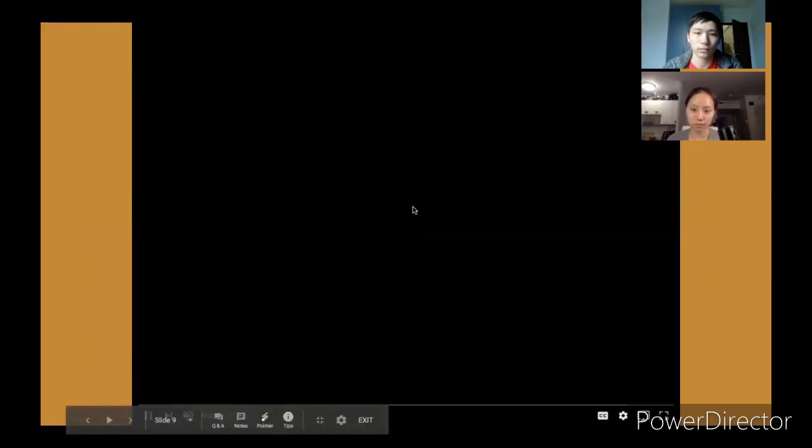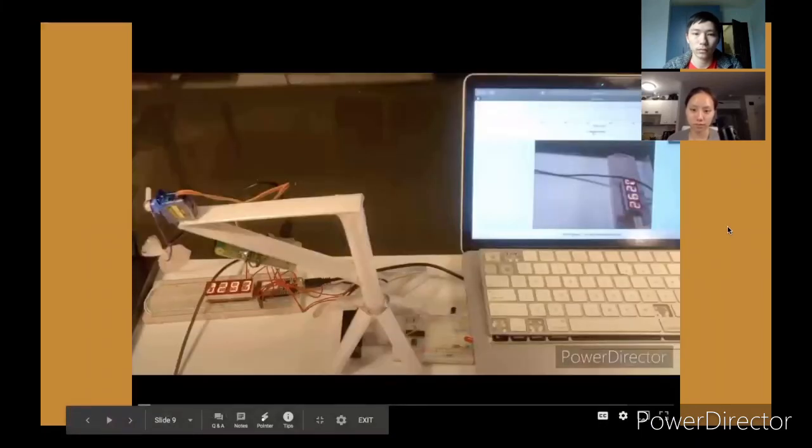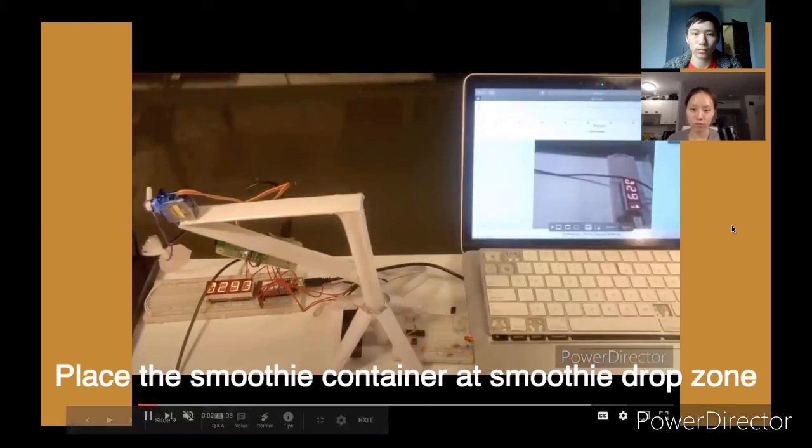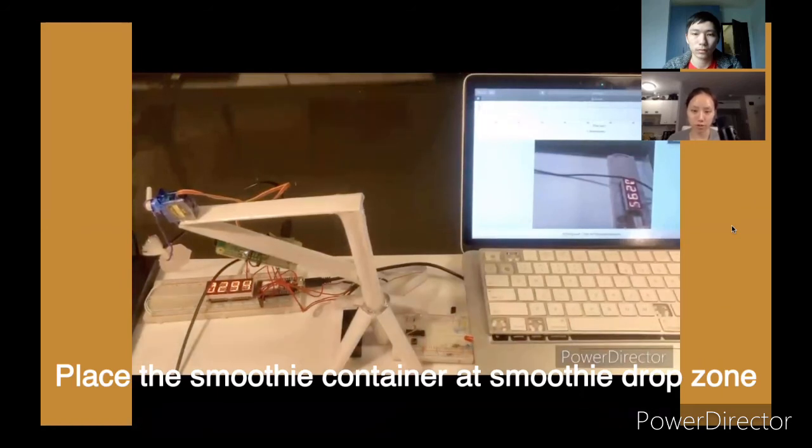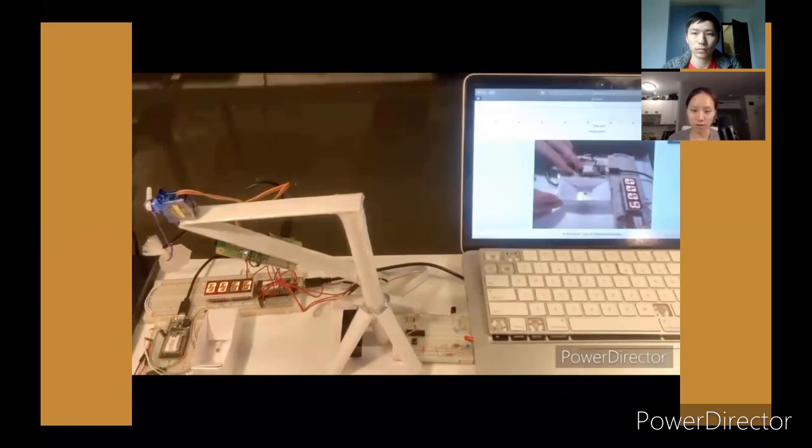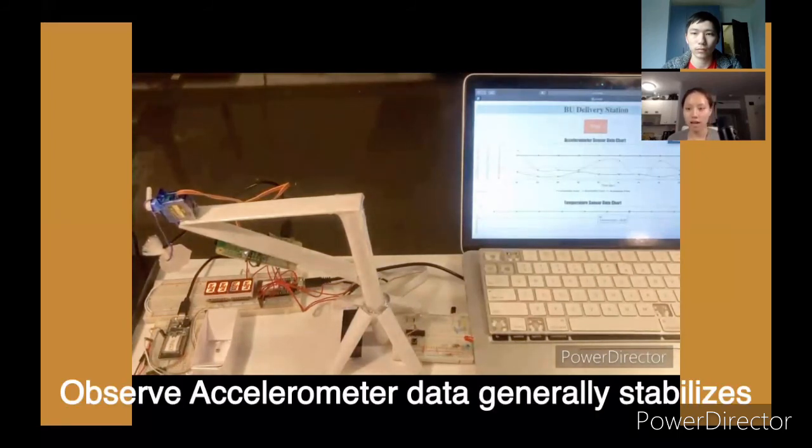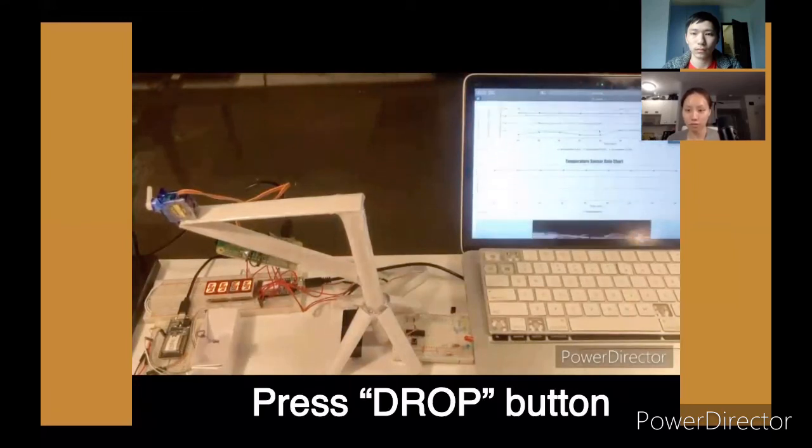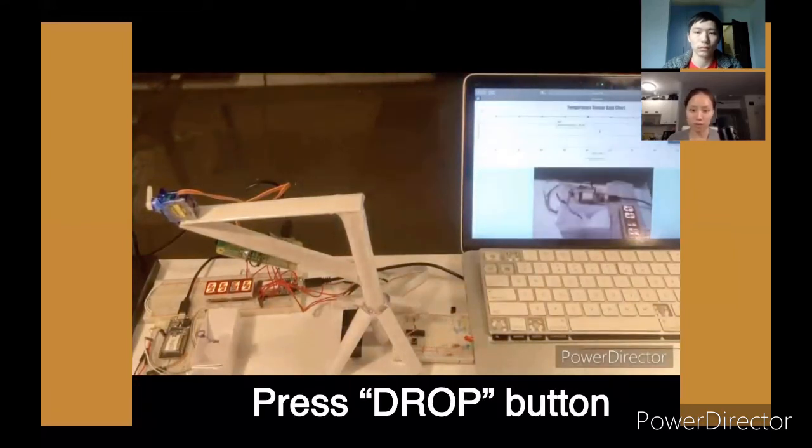This is our demo video. Now we move the container into the drop zone. As you can see, the LiDAR sensor is at 11 centimeters and 9 right now, so the thing is already in the drop zone. You can see in the camera as well. Now you can see that the accelerometer data kind of smoothed out. You press drop, and the food is dropped into the container. You can also see in the camera that the food is in the container.